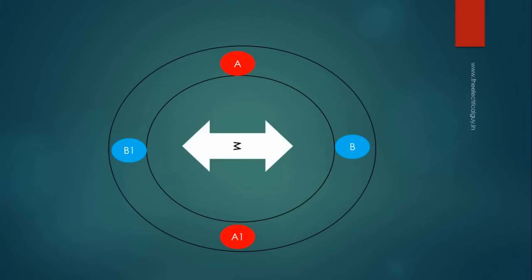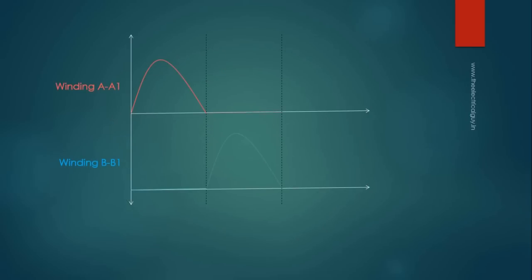So of course, when the magnet will rotate by 90 degrees mechanically, the voltage across winding B, B1 will reach its positive peak and the voltage across winding A, A1 will be zero. Therefore, we can say that these two voltages are out of phase by 90 degrees. This simply means that one voltage will reach its peak before 90 degrees than the other.